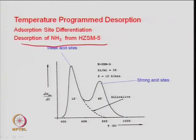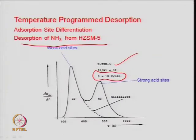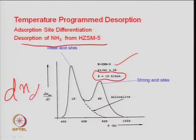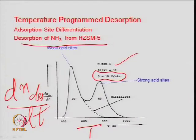The heating rate is 10 Kelvin per minute for a ZSM-5 zeolite with silicon-to-aluminum ratio of 30. Molecules desorbed per unit time (dN/dT) is reported as a function of temperature. There are two peaks visible which can be deconvoluted to study in detail.